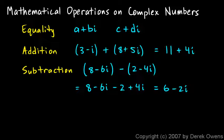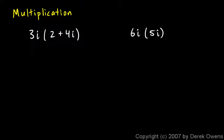Adding or subtracting two complex numbers typically gives a complex number result. Now let's look at multiplication. In this first case I have 3i multiplied by (2 plus 4i). The number 3i doesn't have a real part — it's a pure imaginary number. I'll distribute: 3i times 2 and 3i times 4i.